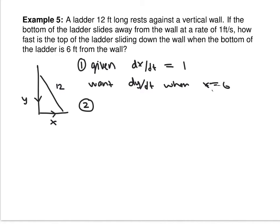The equation we're going to use is x squared plus y squared equals 12 squared. That's an equation that relates X and Y together. Why can I plug in 12 right now but not 6? Because 12 is a constant — the ladder's length never changes. Whereas X is changing, so don't plug X in until you've got the derivative.